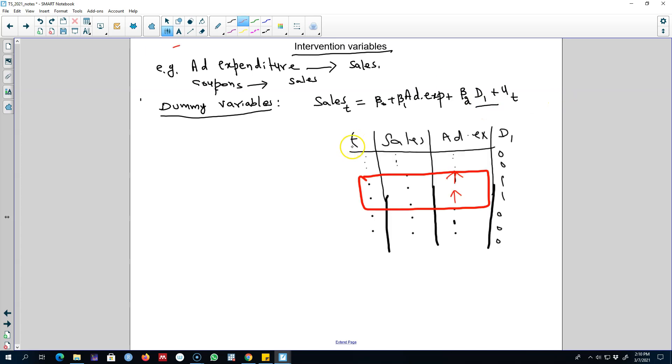Here is our data. We have our time variable here and then our sales value will go in this column. We'll have our ad expenditures and we see that we increased our ad expenditures during this period of time. It could be, for example, these three months, or we start giving coupons during these three months.